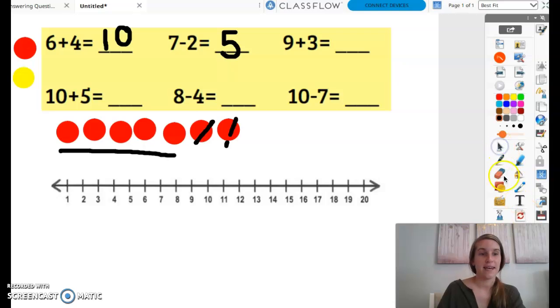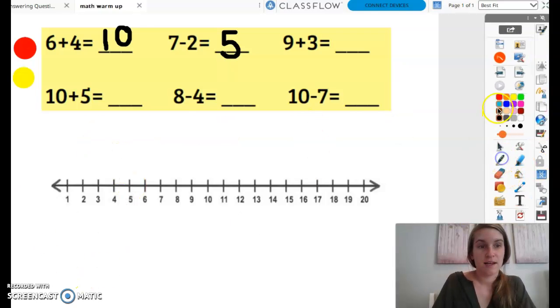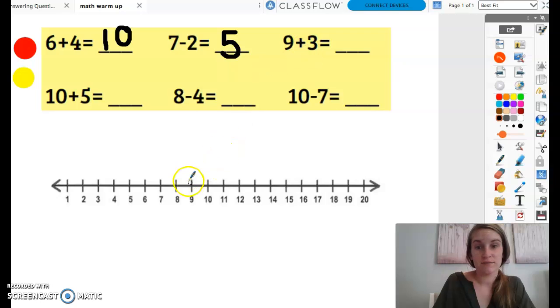Okay, next we have nine plus three. We can use our number line for this. If I have nine, adding three, my numbers are getting bigger. Add one, two, three. Nine plus three equals 12.